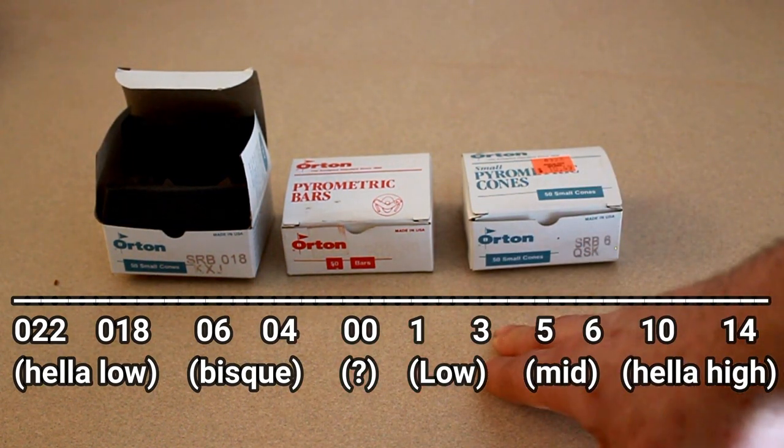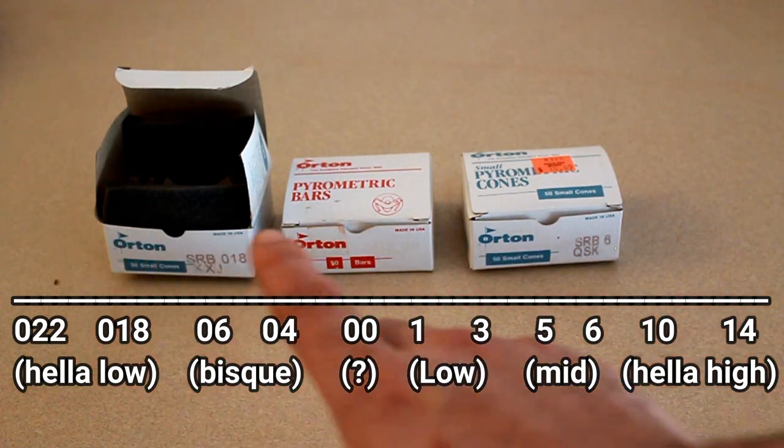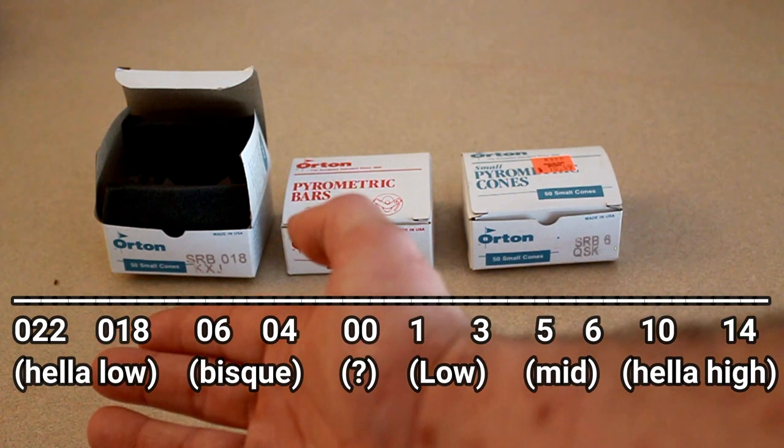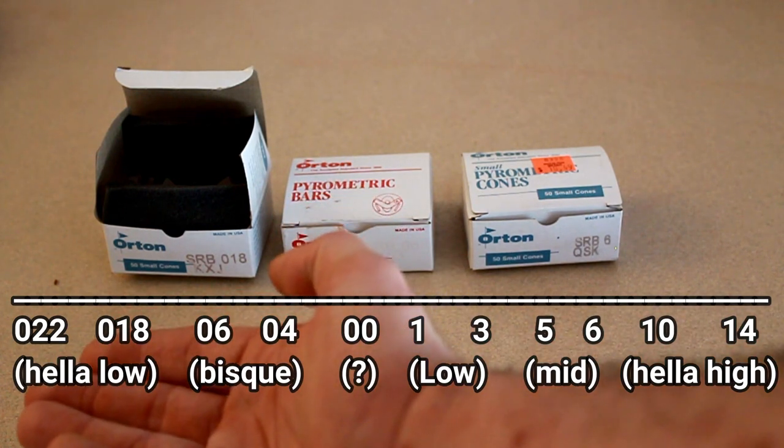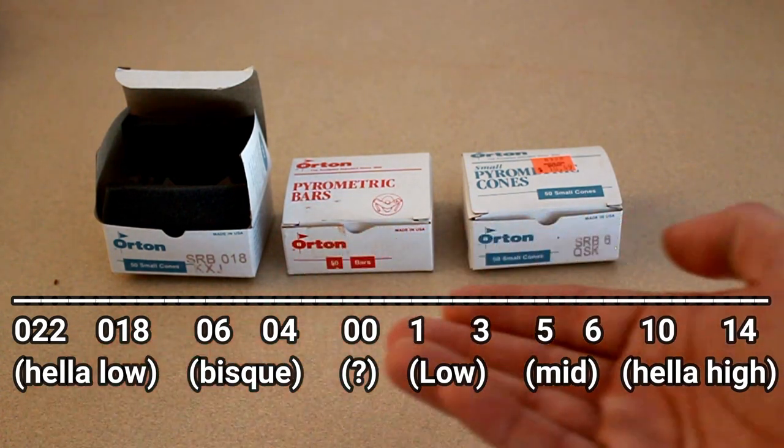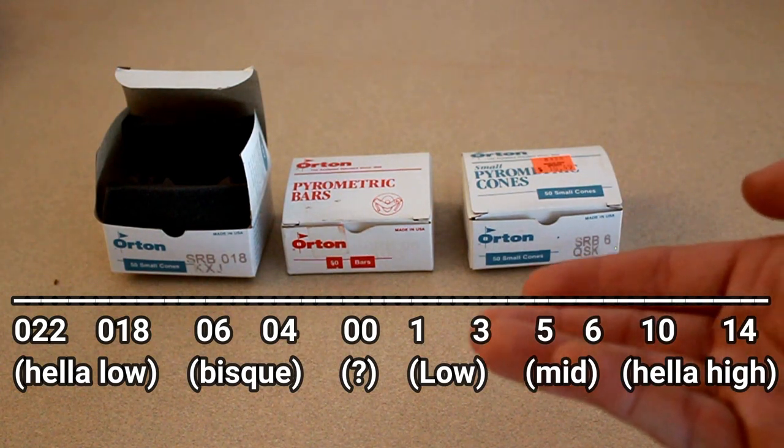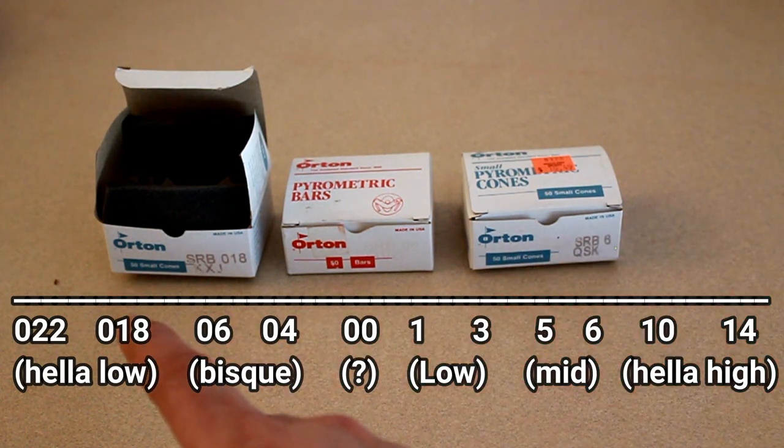You do have to remember that there's a massive difference between the zero scale and the positive scale. Cone 06, which is where I usually do my bisque stuff, is completely different and a much less temperature than cone 6 is.